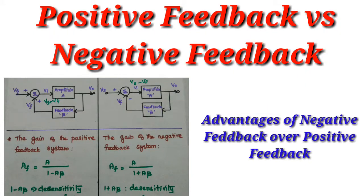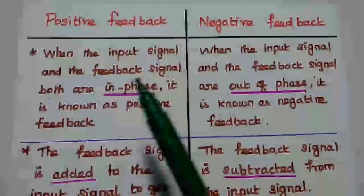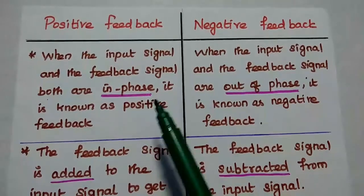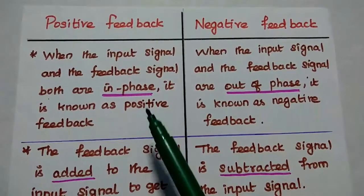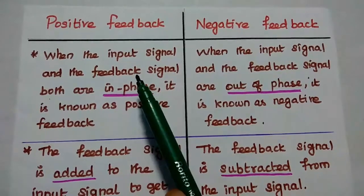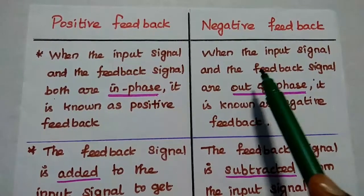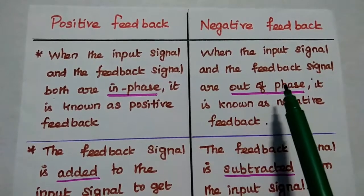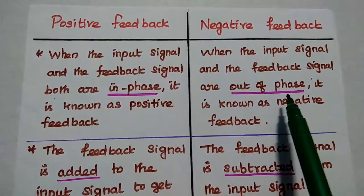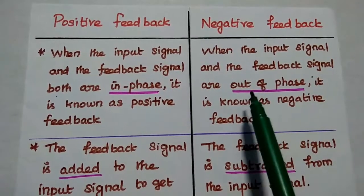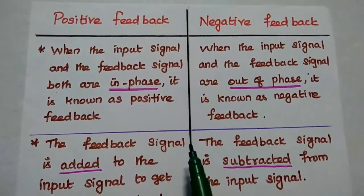Dear students, now we are going to discuss the comparison of positive feedback and negative feedback. When the input signal and the feedback signal both are in phase, it is known as positive feedback. When the input signal and the feedback signal are out of phase with each other, it is known as negative feedback. Here the feedback signal is out of phase with the input signal.